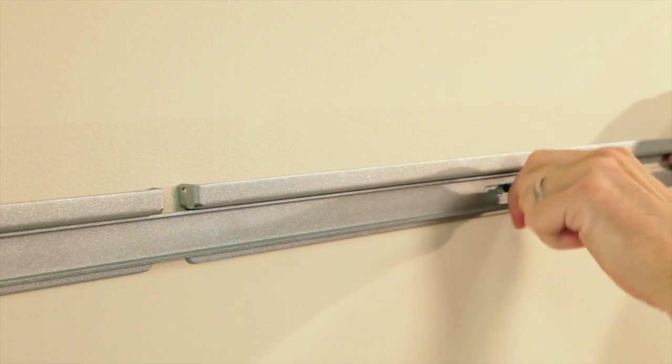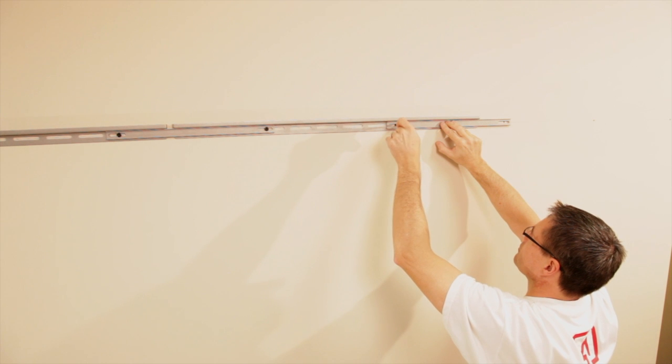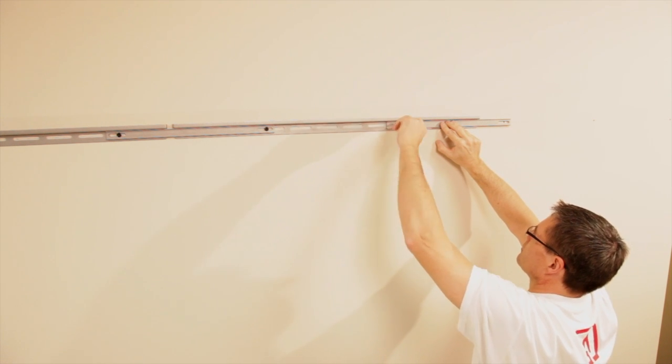Secure the connecting brace to the second rail. Repeat these steps to hang additional rails and braces.